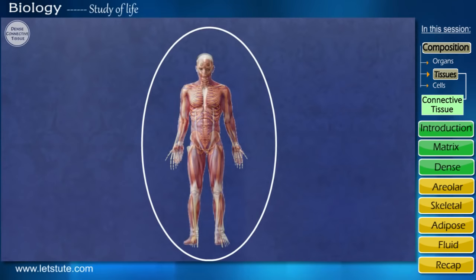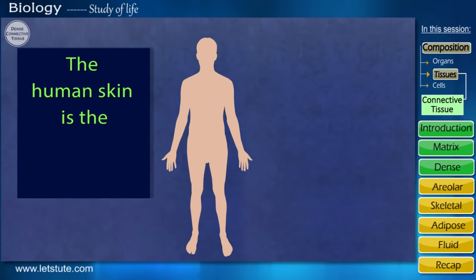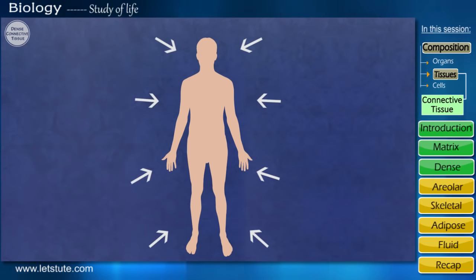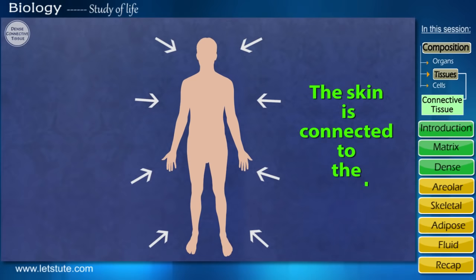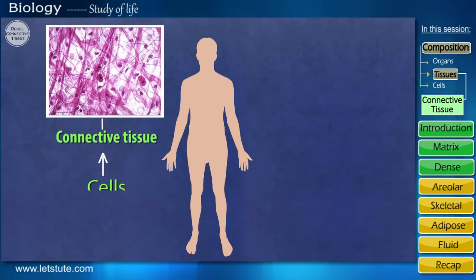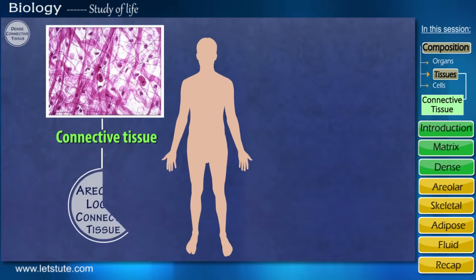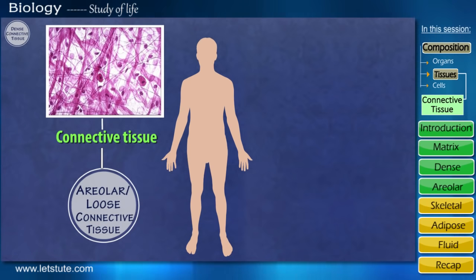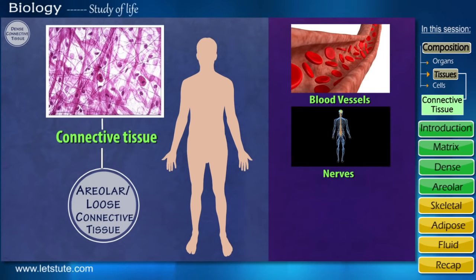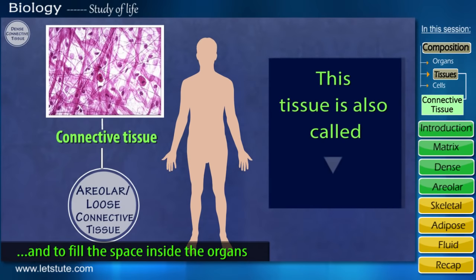To protect our bones and muscles, our skin comes into the picture. The human skin is the largest organ. The skin is connected to our muscles with a type of connective tissue whose cells float in a loose, gel-like medium — and hence this tissue is named areolar or loose connective tissue. It's also present around blood vessels, nerves, in the bone marrow, and to fill the space inside organs.